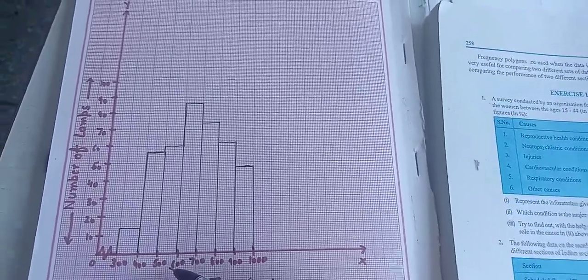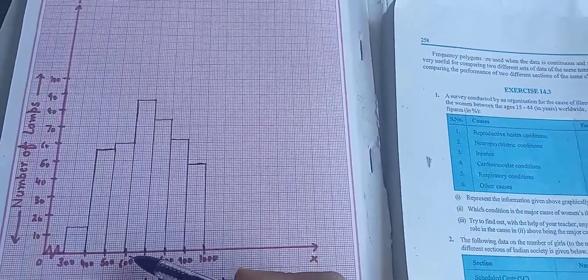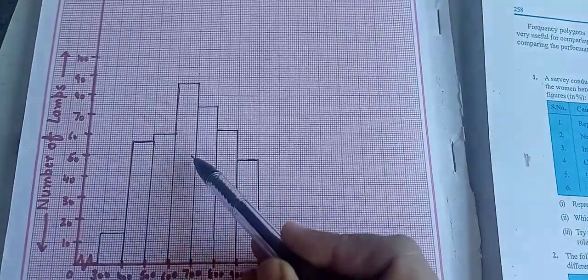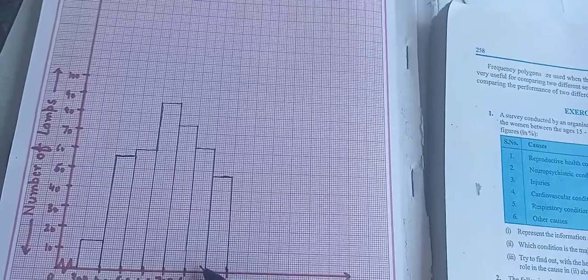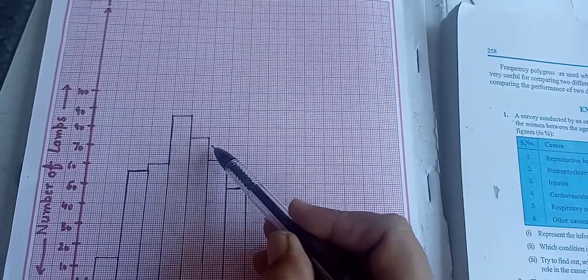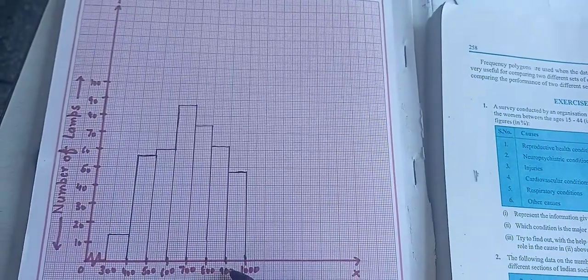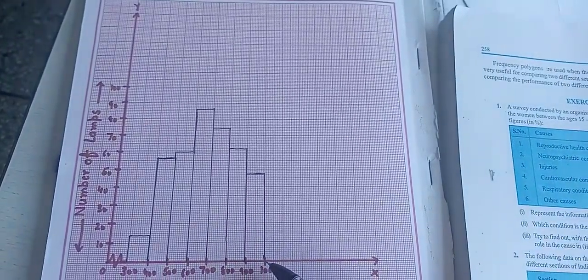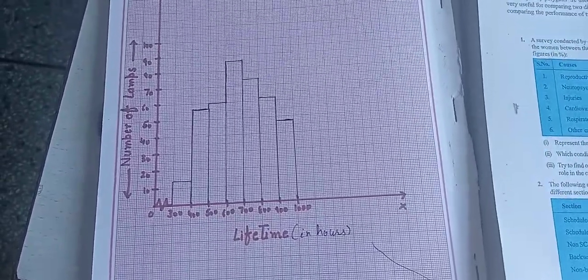Now 500 to 600, these are 60 lamps. So we will represent 60. Then 600 to 700, these are 86. So we will take 86 and draw our bar. Next 700 to 800, we will take 74 on y-axis and draw the bar. Then 800 to 900, that is 62. And last is 900 to 1000, that is 48. So we will draw this one. So this way you have to represent your data on the graph. This is called histogram.